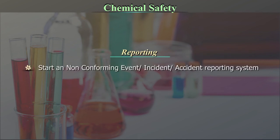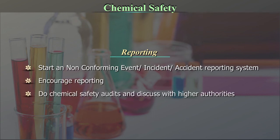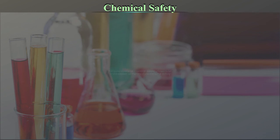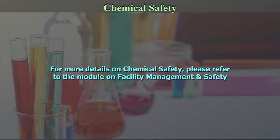Reporting: start a non-conforming event incident/accident reporting system. Encourage reporting. Do chemical safety audits and discuss with higher authorities. For more details on chemical safety, please refer to the module on facility management and safety.